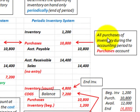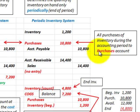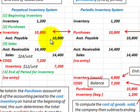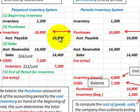Looking at the purchases account in the periodic system: all purchases of inventory during the accounting period go into this purchases account. In this case, we had accounts payable credited for $10,800, since we bought the goods on account. The accounts payable credit is the same for both the periodic and perpetual inventory systems.